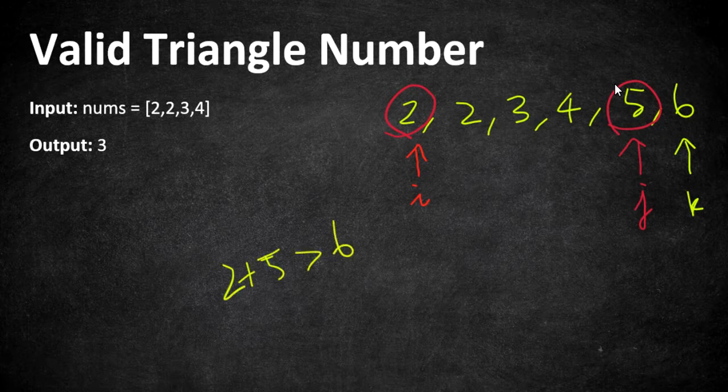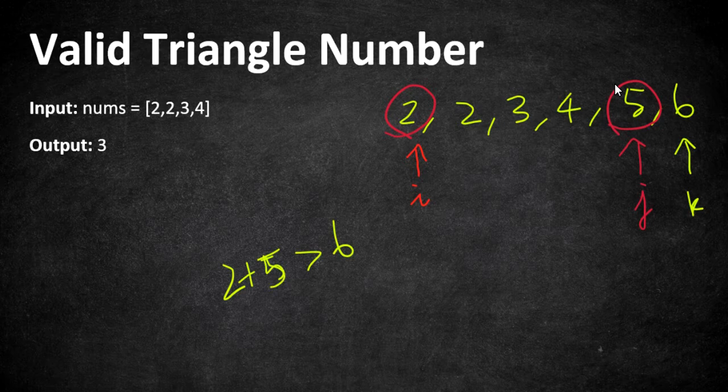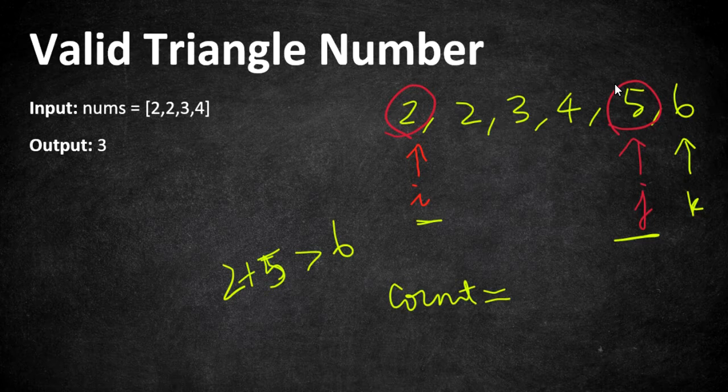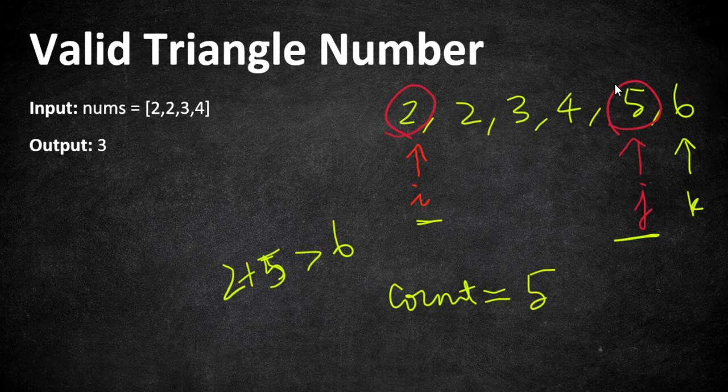In this case, 2 plus 5 is obviously greater than 6, so we could consider this as one triplet. But here we are going to have our counter as the difference between j and i. That is how many numbers are there between j and i, which is 1, 2, 3, 4, 5. So we can possibly form 5 combinations of triplets by keeping...